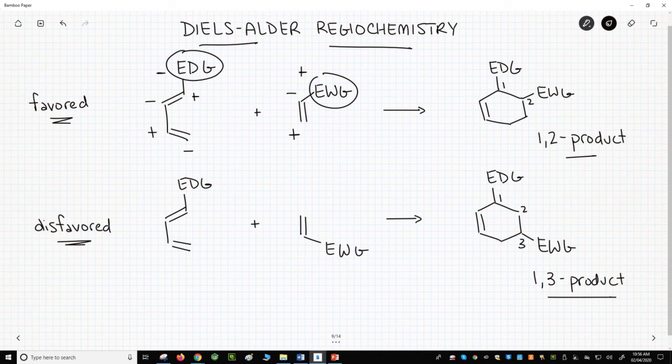Now we've set our imaginary charges. On the top line, the reaction lines up opposite charges on the diene and dienophile. The positive to negative and the negative to positive. This is favorable. The 1,2 product is favored.